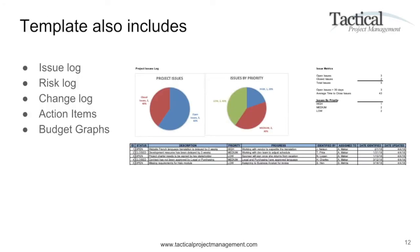The template includes the issue log, the risk log, the change log, action items, and even budget graphs. Each of the tabs within the Excel status report template includes different sections for you to track issues, risks, changes, actions, and so on, all supported by the appropriate graphs and progress charts.